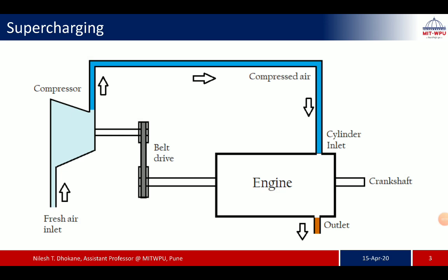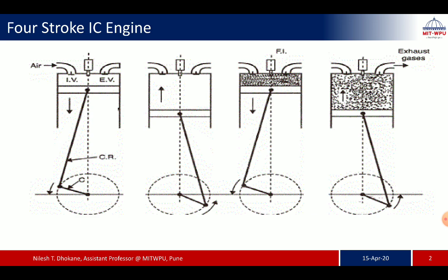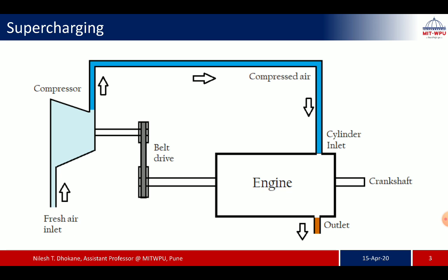The compressor compresses air, increasing its density. Without a compressor, the air taken inside the cylinder during suction is only equal to the cylinder volume at that particular temperature and pressure. With the compressor, the air taken inside the cylinder during the suction stroke is more than in a naturally aspirated engine. The engine without such a compressor is called a naturally aspirated engine, and the engine equipped with such a compressor is called a supercharged engine.